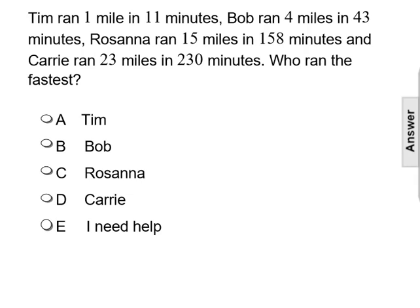So we already know that Tim ran 1 mile in 11 minutes, but let's find the unit rates for Bob, Rosanna, and Carrie. Let's see how many minutes it takes them to complete a mile, and then we can compare who had the shortest time, because that would be the fastest amount.